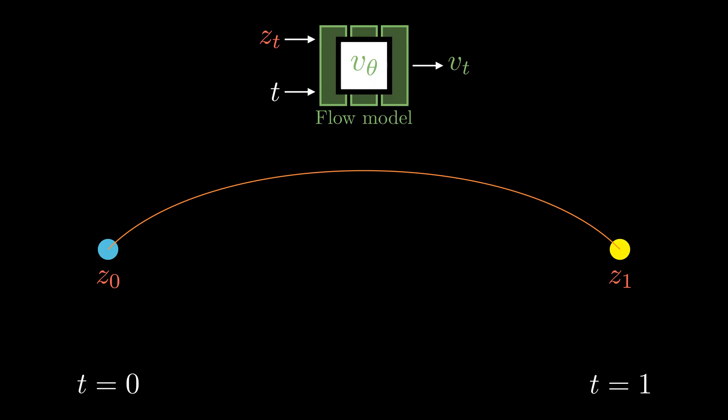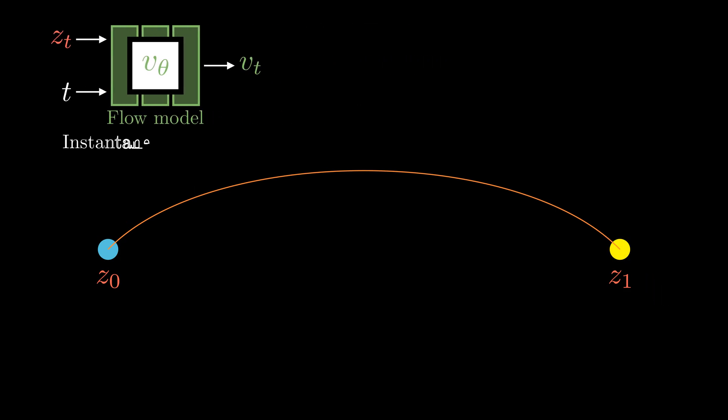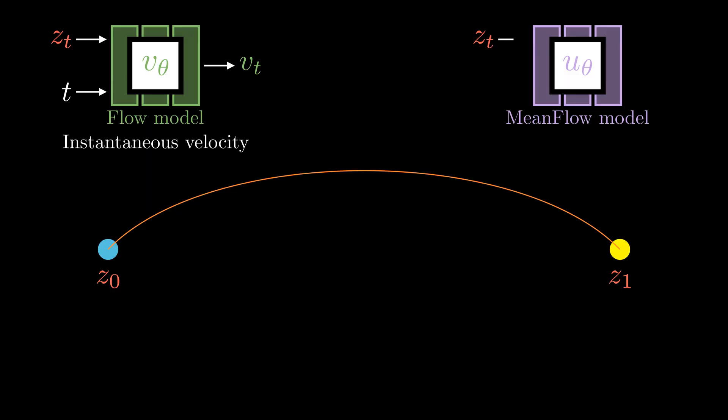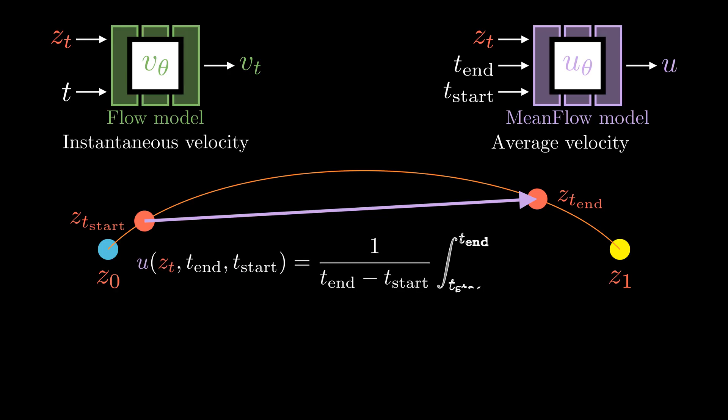Is it possible to generate samples with just one single step? Here the flow model predicts the instantaneous velocity. That is, the velocity at a specific time t. Instead, we can predict the average velocity U between any time interval from t_start to t_end. Here is the formal definition of the average velocity between t_start and t_end. It is the positional displacement between z_end and z_start divided by the time interval.